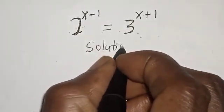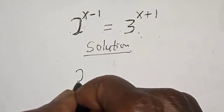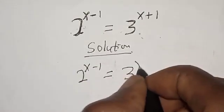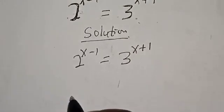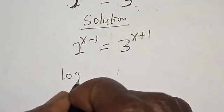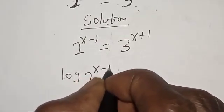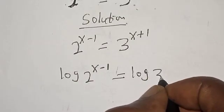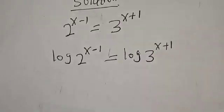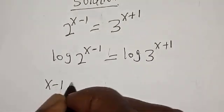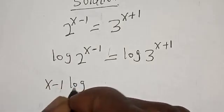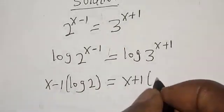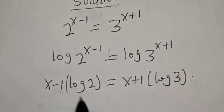Solution. We have the given equation: 2 raised to power x minus 1 is equal to 3 raised to power x plus 1. Let's take the log of both sides. We have log of 2 raised to power x minus 1 is equal to log of 3 raised to power x plus 1.